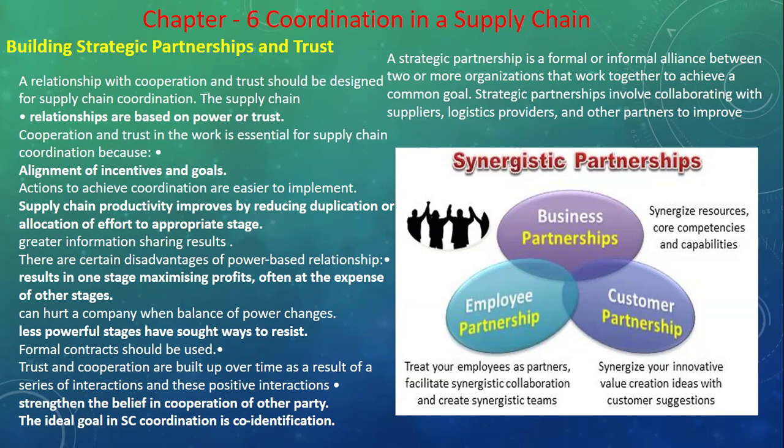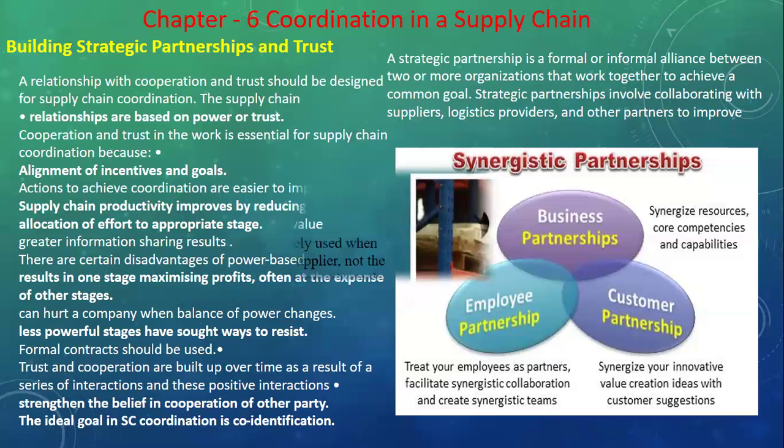Strategic partnership involves collaboration with the supplier, logistics provider, and other partners to improve the process. For example, a manufacturing company works for manufacturing and receives many orders from customers. Employees manufacture the goods and the logistics team dispatches them. The supplier arranges the raw materials. The entire supply chain is very important — if it is strong, it will give efficient output. We can coordinate the supply chain by building strategic partnerships and trust between business partners, employees, and customers.